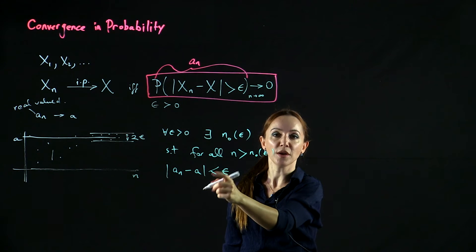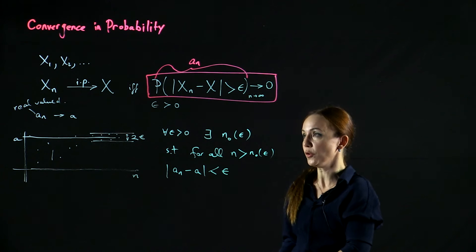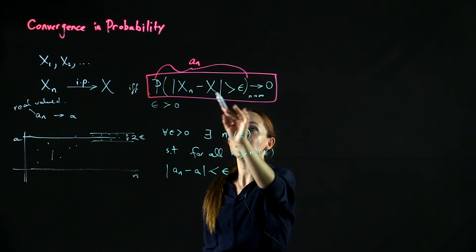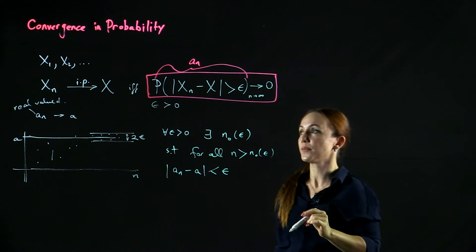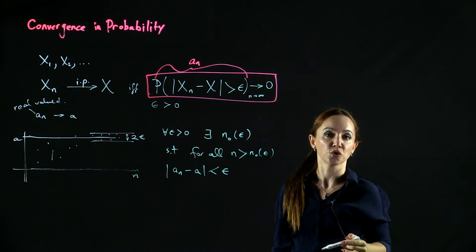So this is what it means for a real sequence to converge. And our probabilities converge as a real sequence. And that is called convergence in probability.